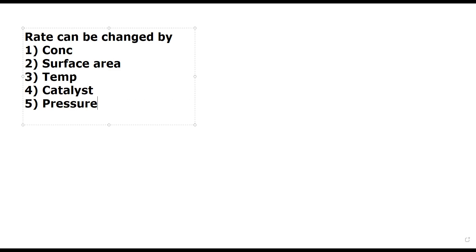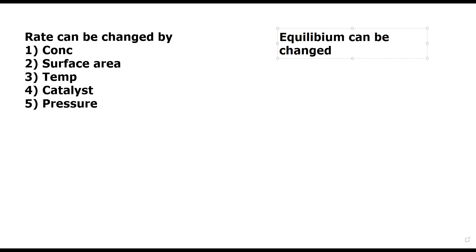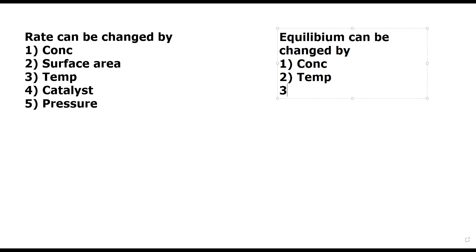If we want to shift the equilibrium, the equilibrium can be affected by only three factors: concentration (like adding reactant or product), increasing or decreasing temperature, and pressure. So these are the three factors which can shift the equilibrium, and those were the five factors which can alter the rate or speed of a chemical reaction.